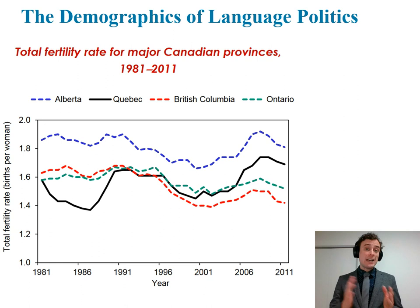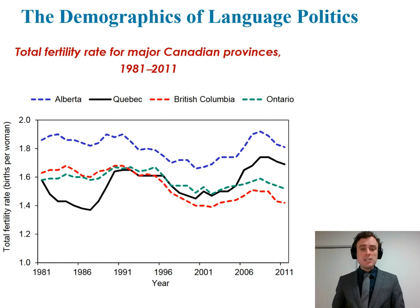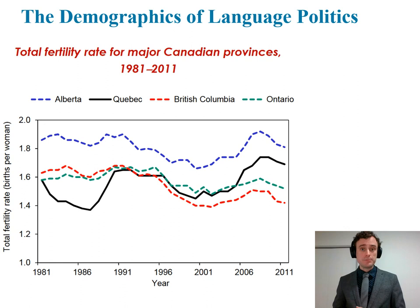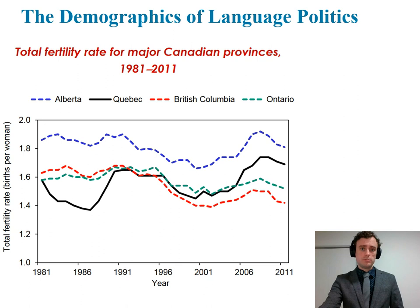If we zoom in on the more current period from 1981 to 2011 and compare provinces by total fertility rates, we see that Quebec maintained a lower position relative to other provinces across most of this period, with a low point in the late 1980s. However, Quebec has rebounded somewhat, now only below Alberta and higher than British Columbia and Ontario as of 2011. Nonetheless, what we have seen is a sharp decline in the relative size of the francophone population due to immigrants selecting English and a declining birth rate in Quebec.